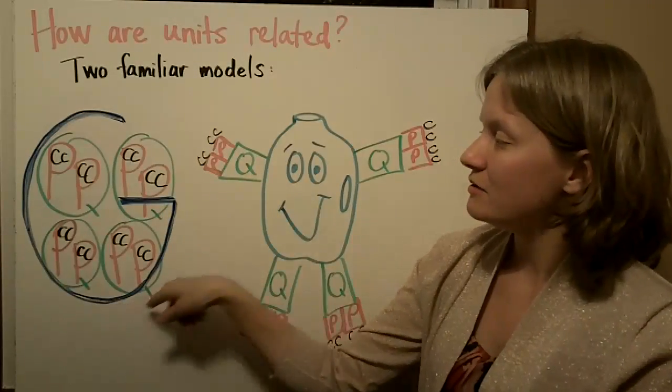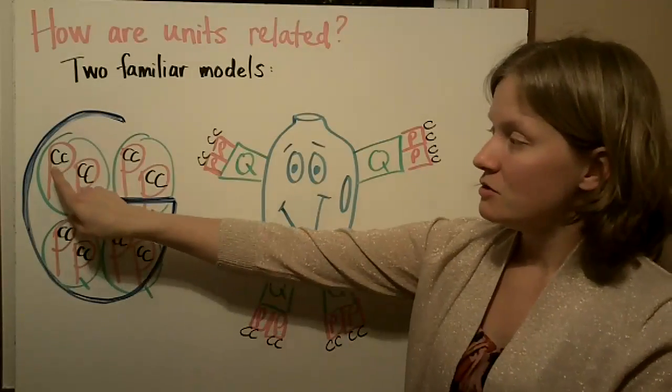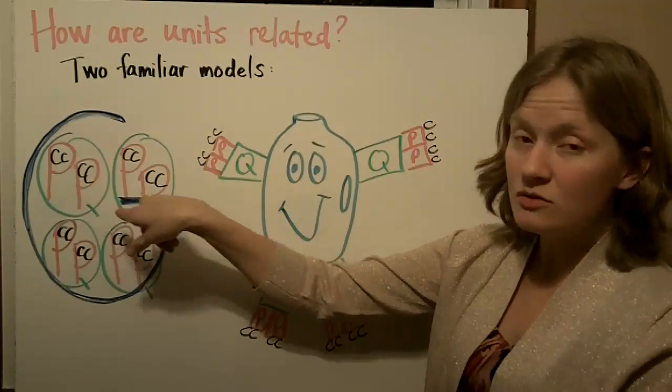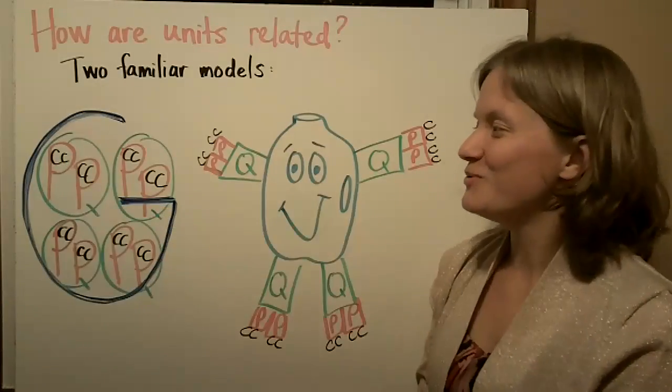It goes like this: Draw a gallon, draw a gallon, add four quarts, add four quarts. Two pints in each quart, two pints in each quart. Two cups a pint, two cups a pint.